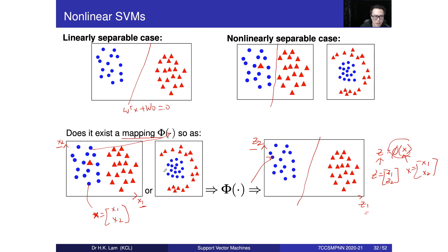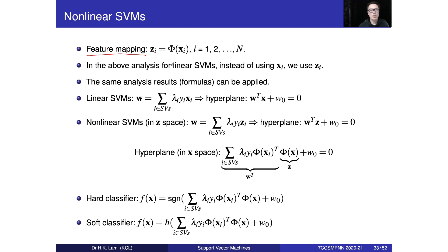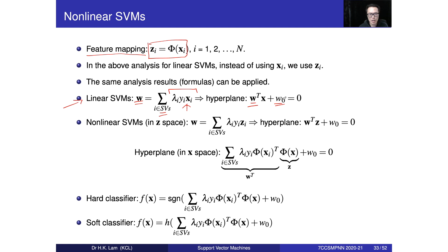Instead of designing the support vector machine in X1, X2 space, we are going to design it in Z1, Z2 space — and this is a linearly separable case. So if we can find a φ that turns these samples into a linearly separable case, we assume that mapping exists. Now, this is the linear SVM: W is given by this expression, contributed only by those X that are the support vectors — lambda I times the label times X — and we still need to find W-naught. Now, instead of designing the SVM in X space, we design it in Z space.